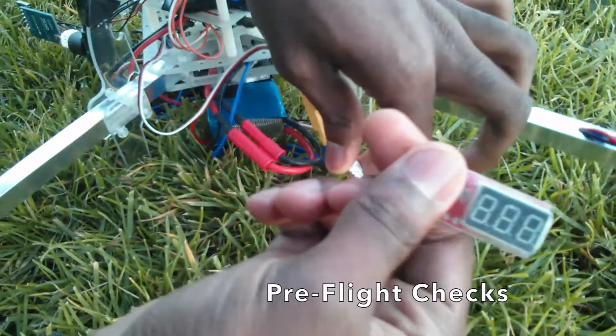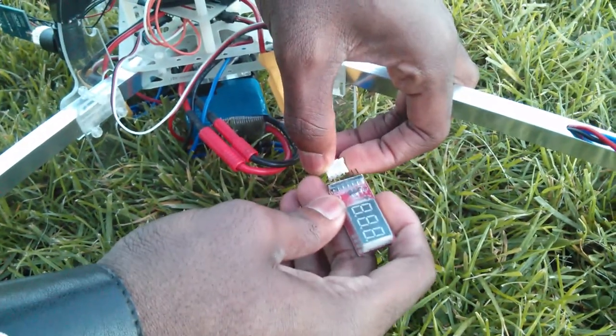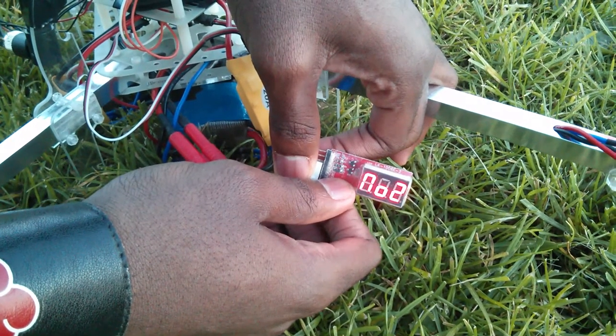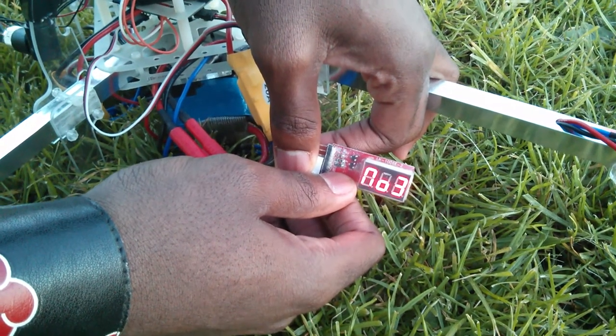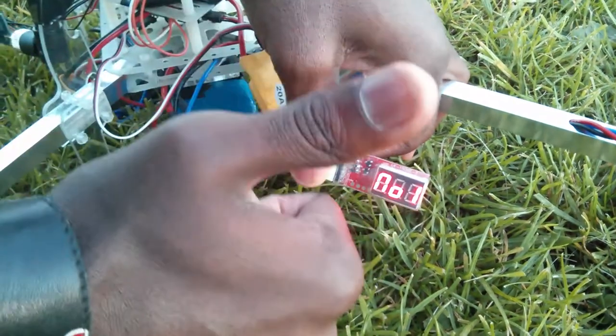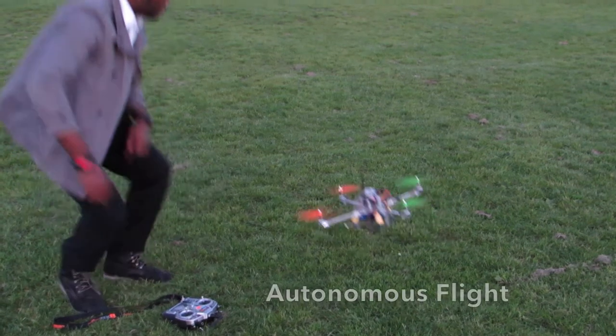Now on to the field. There are many checks that should be performed before flight. However, this video showcases one, which is the voltage check. The drone requires 12 volts to be powered. However, it's always good to be slightly overcharged as the voltage will drop when under load. 12.5 volts is perfect. With waypoints loaded, a signal is sent from the radio to the drone to commence autonomous flight.